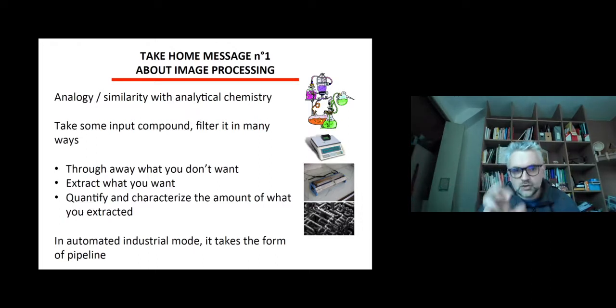This is the convolution operation that we've seen. We will throw away what we don't want through denoising, extract what we want by highlighting edges or regions, and then quantify and characterize the amount of what we've extracted. When it's fully automated in industrial mode, it takes the form of a pipeline in chemistry, and that's also the word we have for image processing.